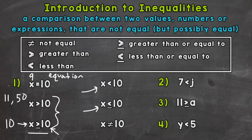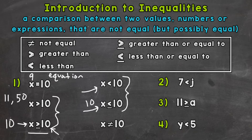For x is less than or equal to 10, 10 would work for this one but not the top one. So you can see the difference between the less than sign — x is less than 10 — and x is less than or equal to 10. These two inequalities both have any value less than 10 as a solution, but the less than or equal to allows us to include 10 in those solutions.